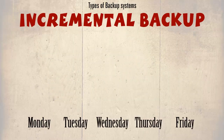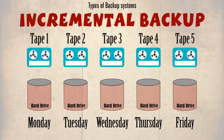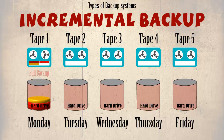Let's look at the first option: incremental backup. Here we have the days of the week, Monday through to Friday. We also have a representation of the contents of the hard drive on each day, and five blank tapes called tape 1 through to tape 5. In our example, on Monday a full backup is created and saved to tape 1, so this is referred to as the starting point.